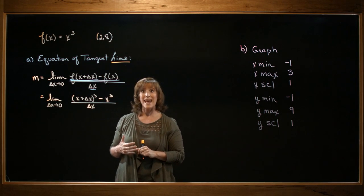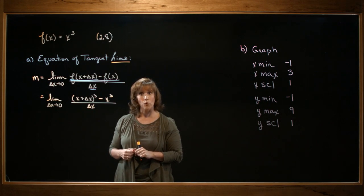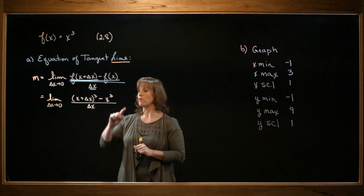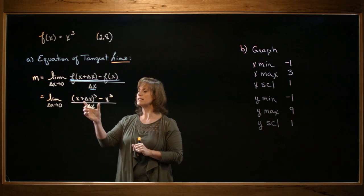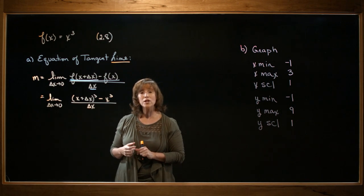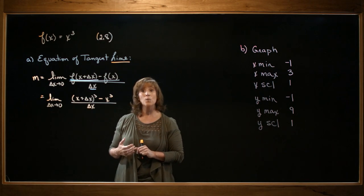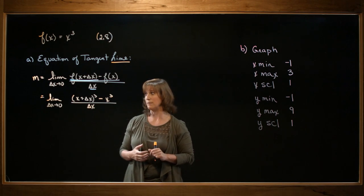Okay, if I try to evaluate the limit at this stage, I'm going to get 0 over 0, which is an indeterminate form. So I need to find a way of rewriting that expression. As I look at this, I notice that I have x plus delta x quantity cubed. I'm going to go ahead and multiply that out. So what I need to do is multiply x plus delta x by itself three times.